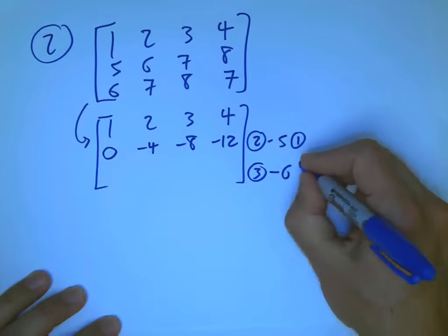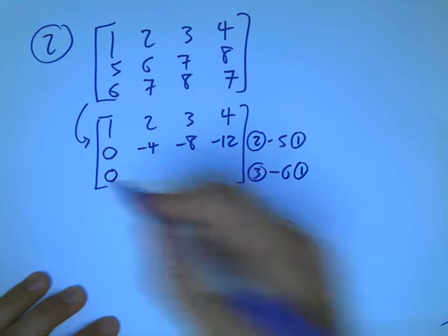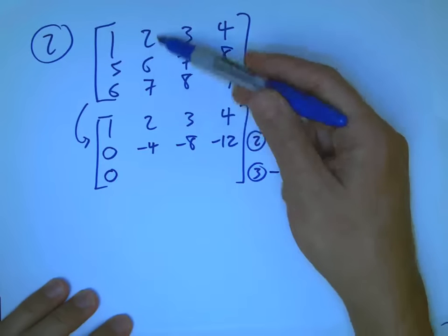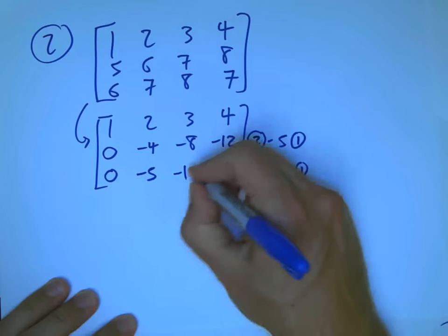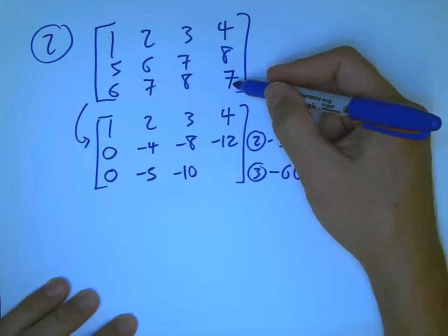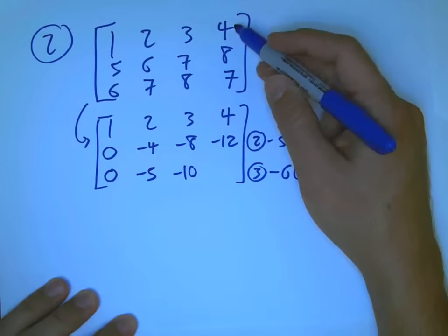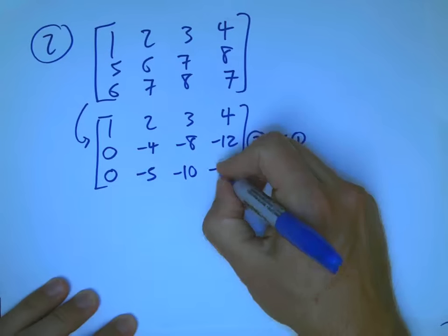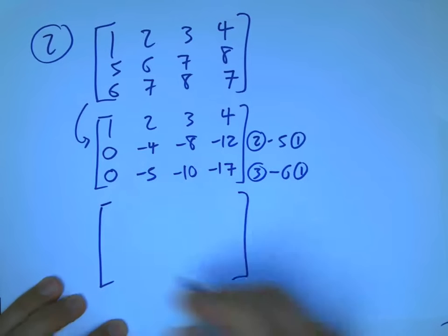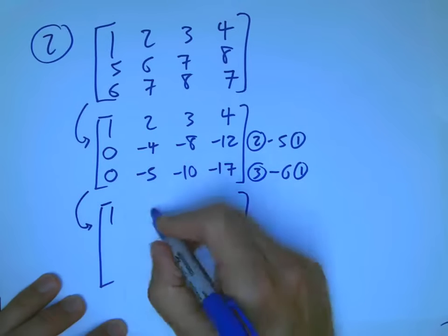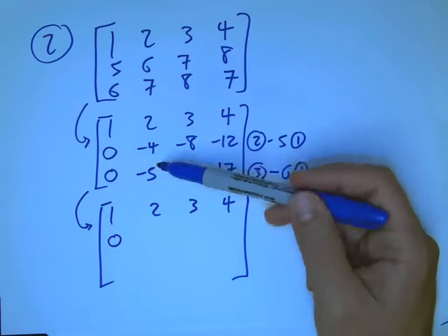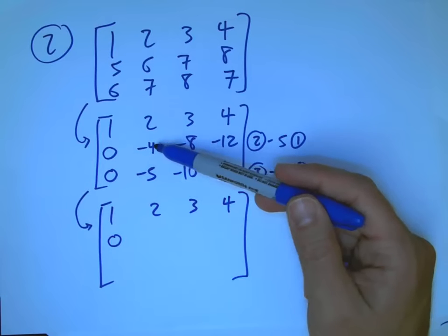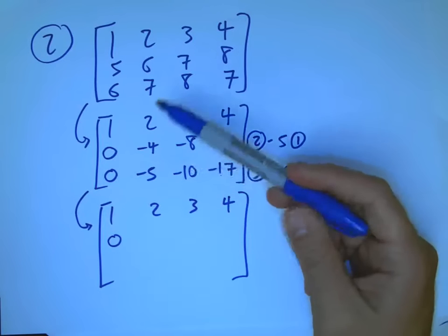And we're going to take the third row minus 6 times the first row. That's going to make a 0 here. 7 minus 12 is minus 5, 8 minus 18 is minus 10, and 7 minus 24 is minus 17. And now, you might have noticed that you can change the pivots to be 1 whenever you want to do that.